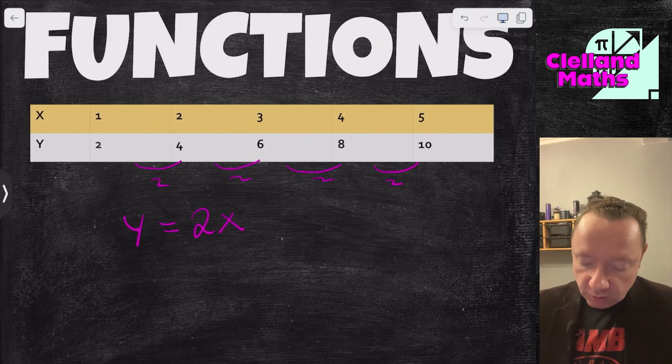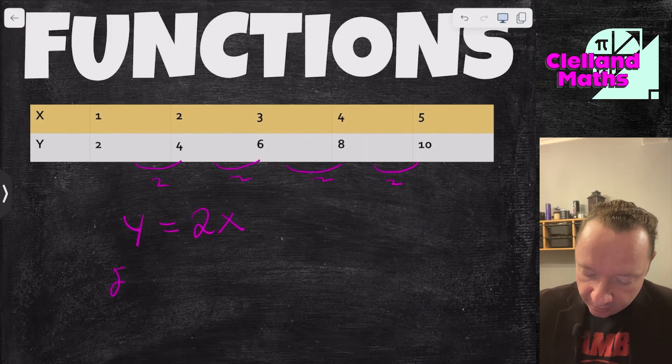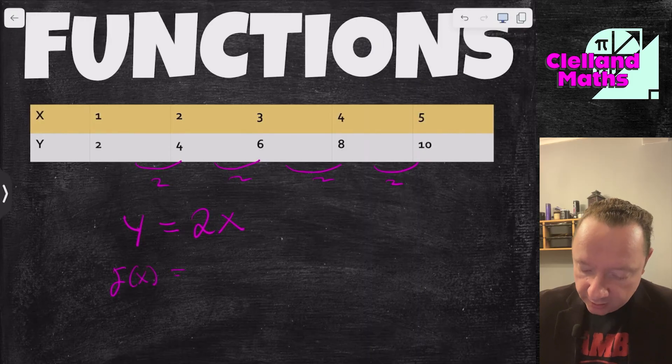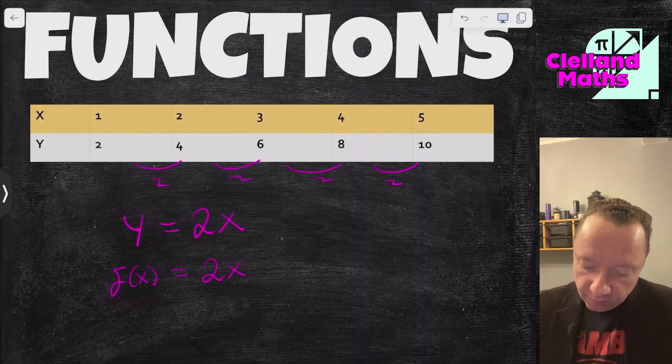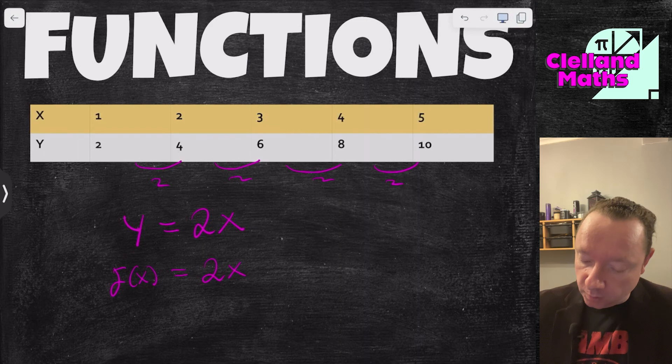But I could call this function notation. So I could say that f of x, which is exactly the same as y, just equals 2x. And that function notation kind of is cluing me in that f of x is equivalent or the same as y for most purposes.